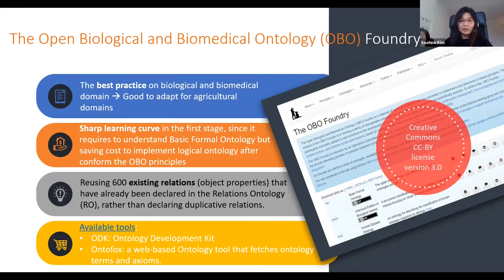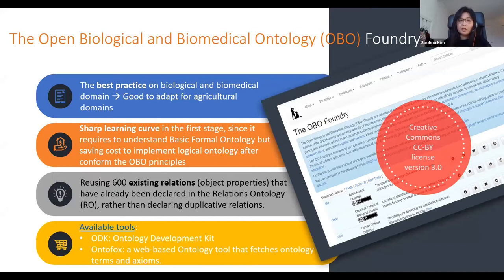Another thing I learned is that we don't have to build the relations from scratch. Normally we use two different properties — object properties and data properties. In OBO Foundry they already built the Relation Ontology which covers most of the existing relations, covering around 600 relations. So we can adapt it. OBO Foundry also provides some tools — the Ontology Development Kit (ODK) and OntoFox — which help us develop the ontology more easily.